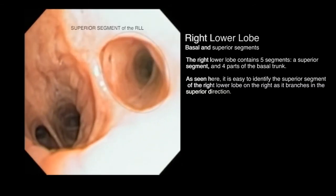The right lower lobe contains five segments: a superior segment and four parts of the basal trunk. Seen here, it is easy to identify the superior segment of the right as it branches in the superior direction.